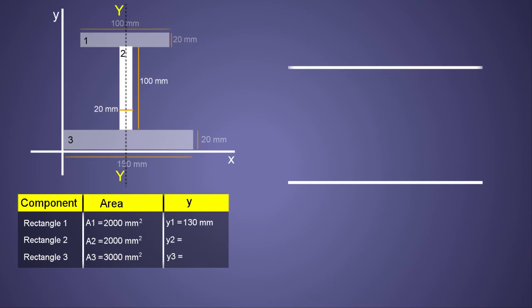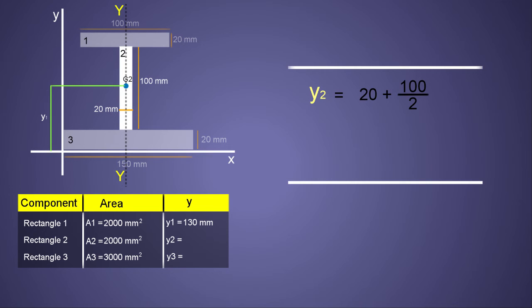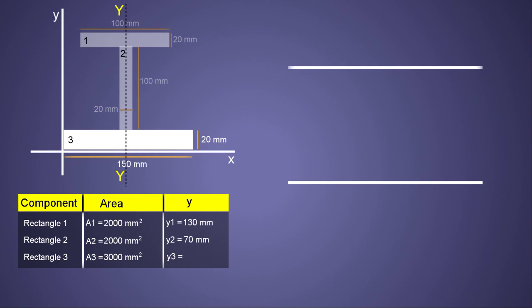For rectangle 2, y2 equals the height of rectangle 3 (20 mm) plus half the height of rectangle 2 itself (100/2 = 50 mm), giving y2 = 20 + 50 = 70 mm. For rectangle 3, y3 is simply half its own height: 20/2 = 10 mm.